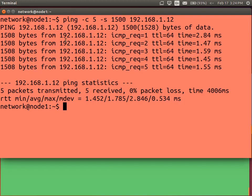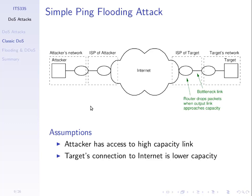Now let's see how ping can be used in a denial of service attack. Here is our example network structure: the attacker has their local network connected to an ISP, which connects to the internet. The target is some organisation with a server — maybe a web server — connected to the internet via their own ISP. The key is the link from the target organisation to its ISP, which is often the bottleneck — the slowest link in the path. Inside the ISP's network there are very high speed links, but the link to the end customer is one of the slower ones.